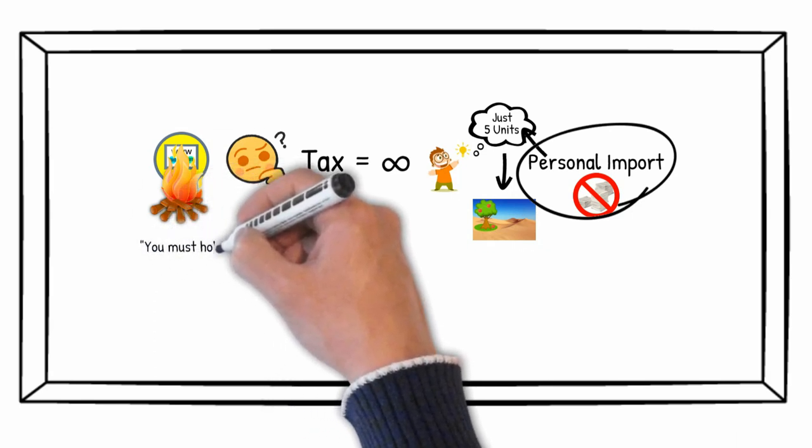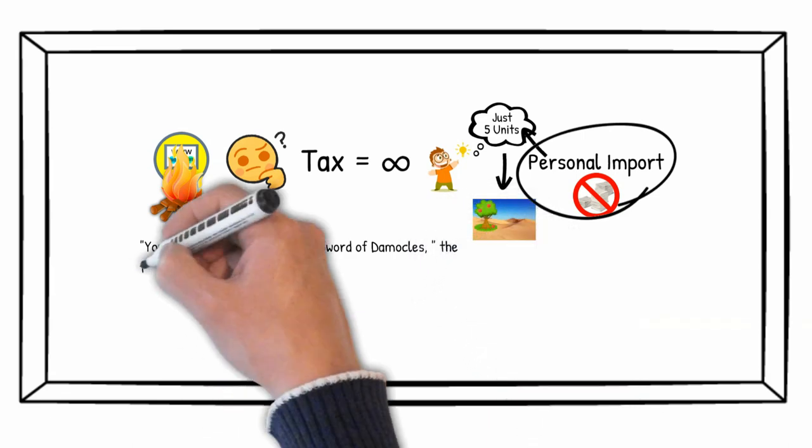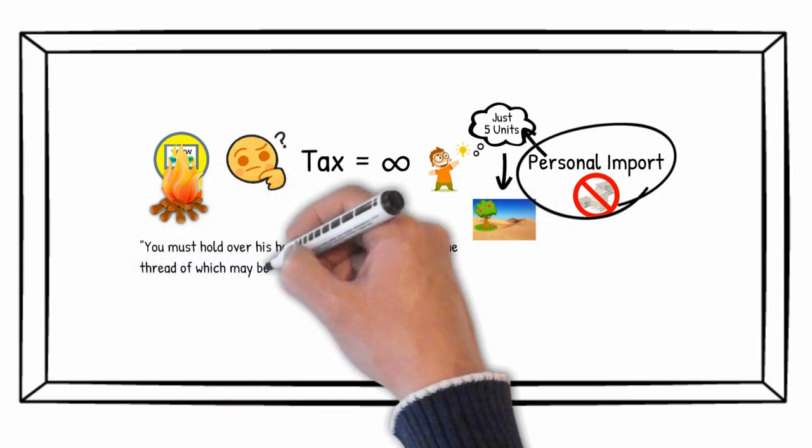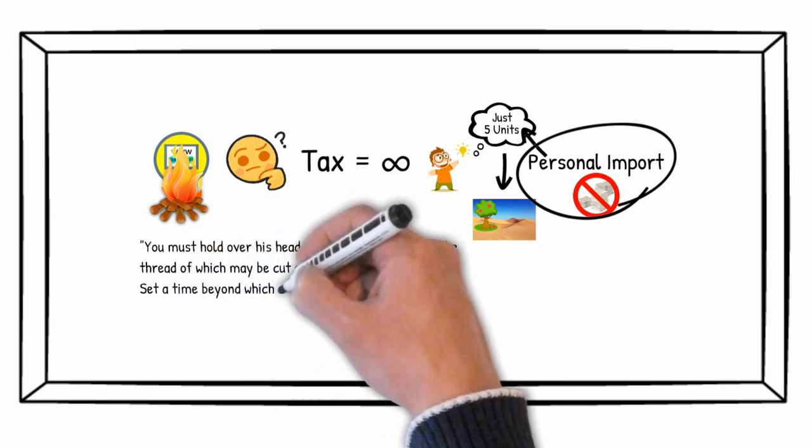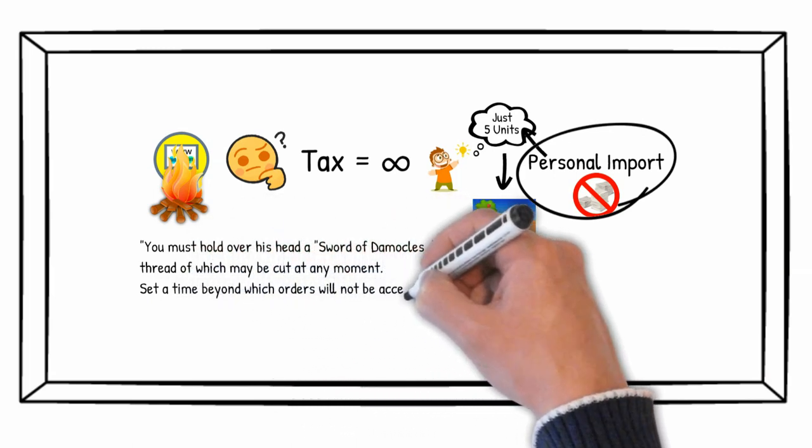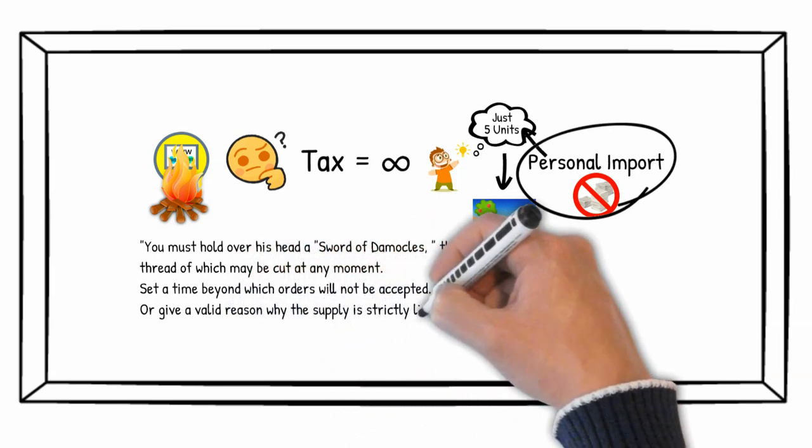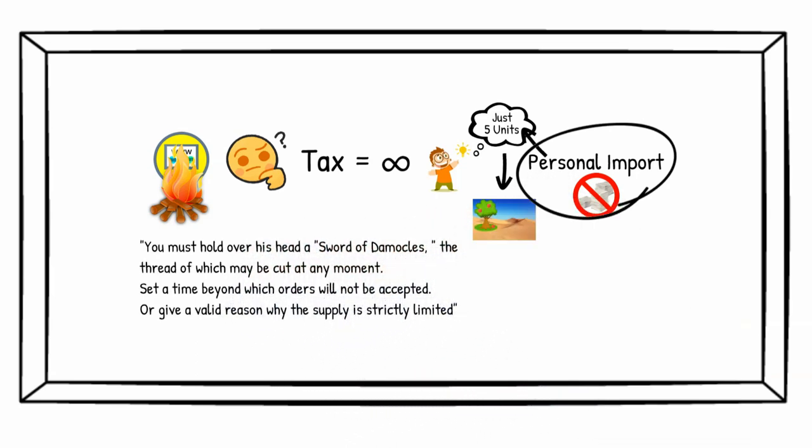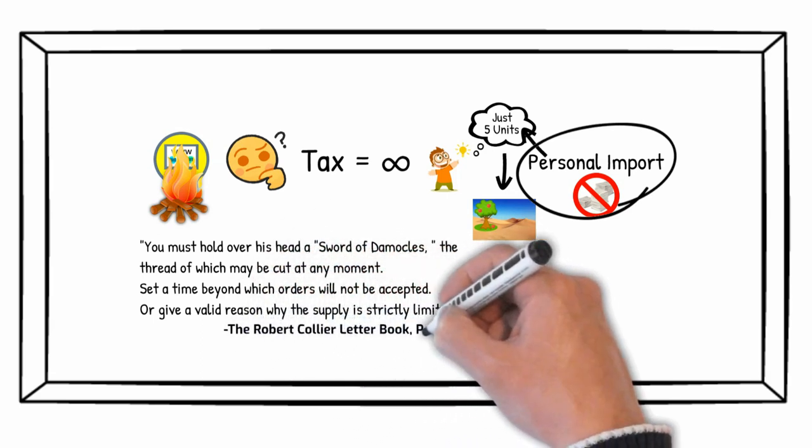In Robert's words, you must hold over his head a sword of Damocles, the thread of which may be cut at any moment. Set a time beyond which orders will not be accepted, or give a valid reason why the supply is strictly limited. The Robert Collier Letterbook, page 344.